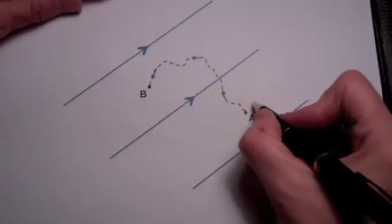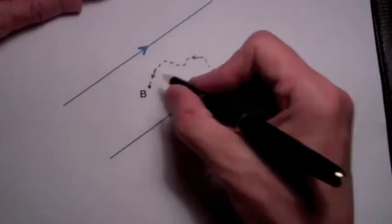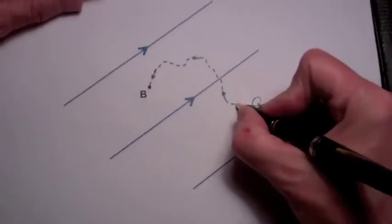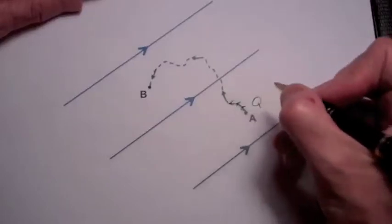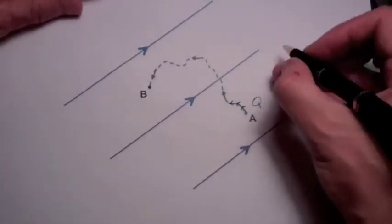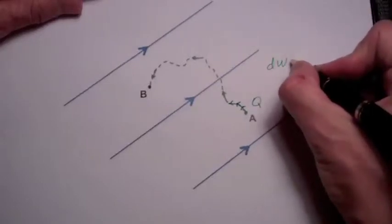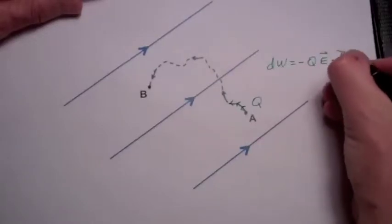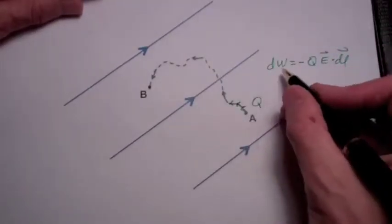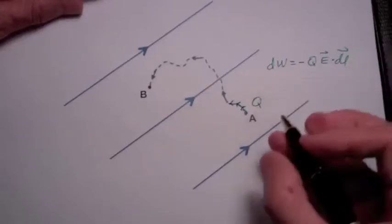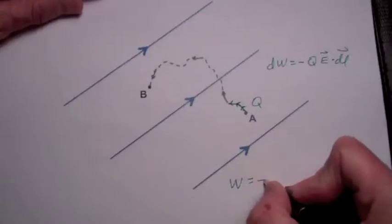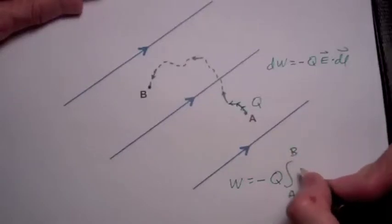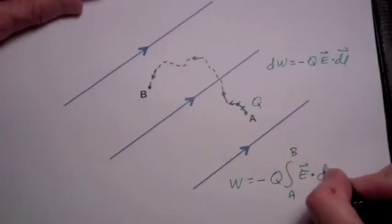Now let's take our charge Q and move it from position A to position B along the path shown. We can think of this movement as a combination of all these little D sub L movements. We know for each individual movement D sub L the work being done is minus Q times E dot DL. So the work to go from A to B would be the sum of all these differential works, or the work equals minus Q times the integral from A to B of E dot DL.